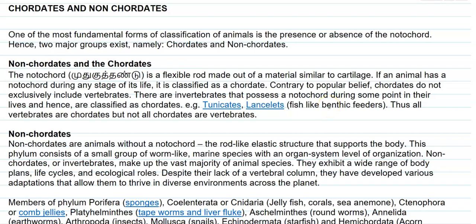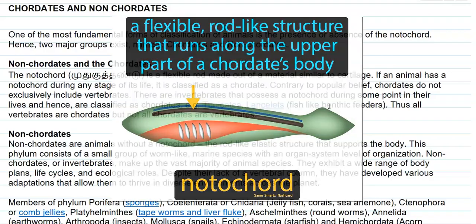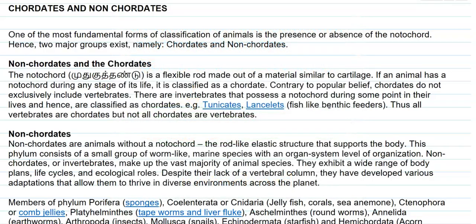In this screencast video lecture, we are going to see the explanation for chordates and non-chordates group of animals. One of the fundamental forms of classification of animals is based on the presence or absence of the notochord. The notochord is a flexible rod made out of a material similar to that of cartilage. Based on this presence, an animal can be referred to as a chordate, and those which do not contain a notochord are referred to as non-chordates.